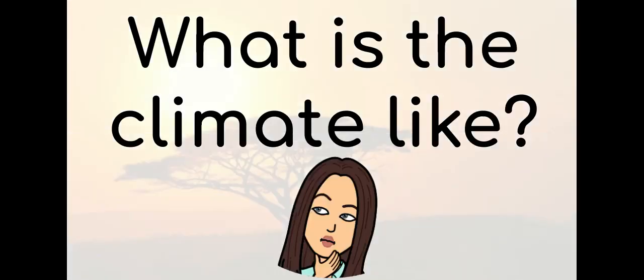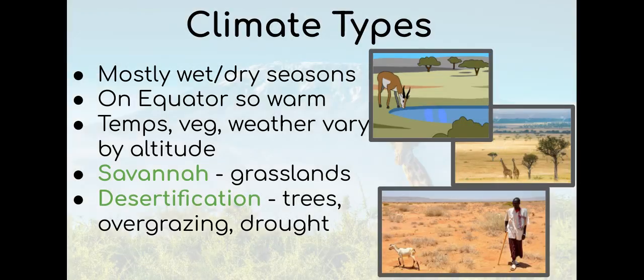Today we will focus on what the climate is like in Eastern Africa. Mostly this area varies between wet and dry seasons. Usually it is very warm because it is near the equator, so the sun is more directly shining and heating the air. But as you go up in altitude, it does get cooler.